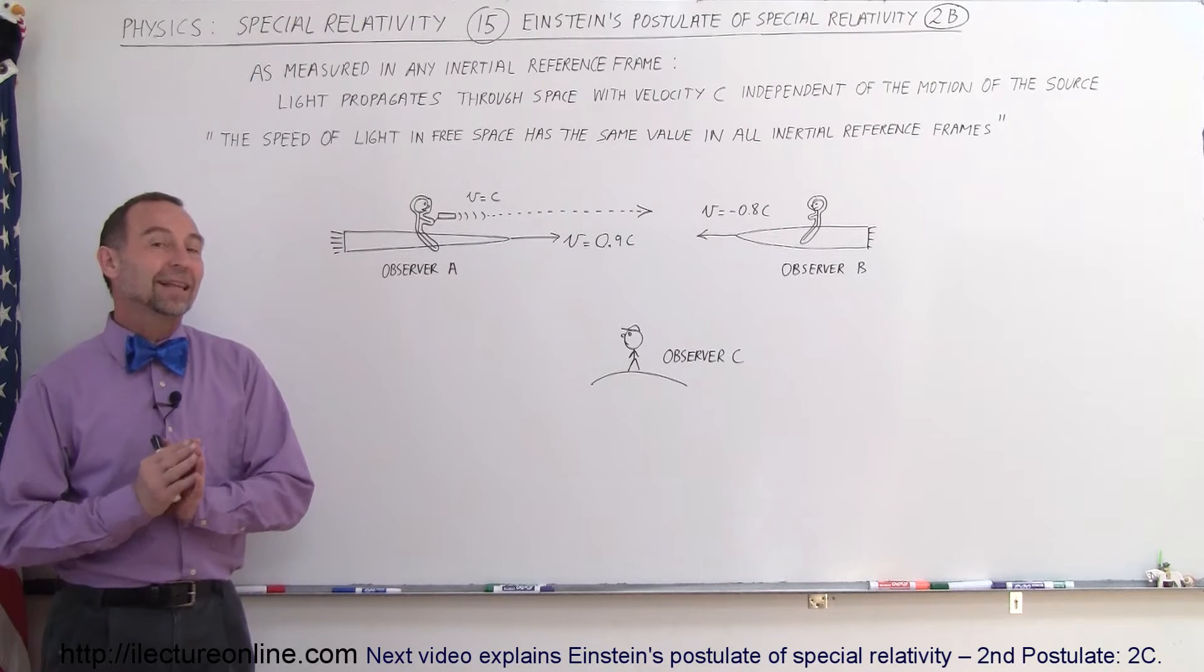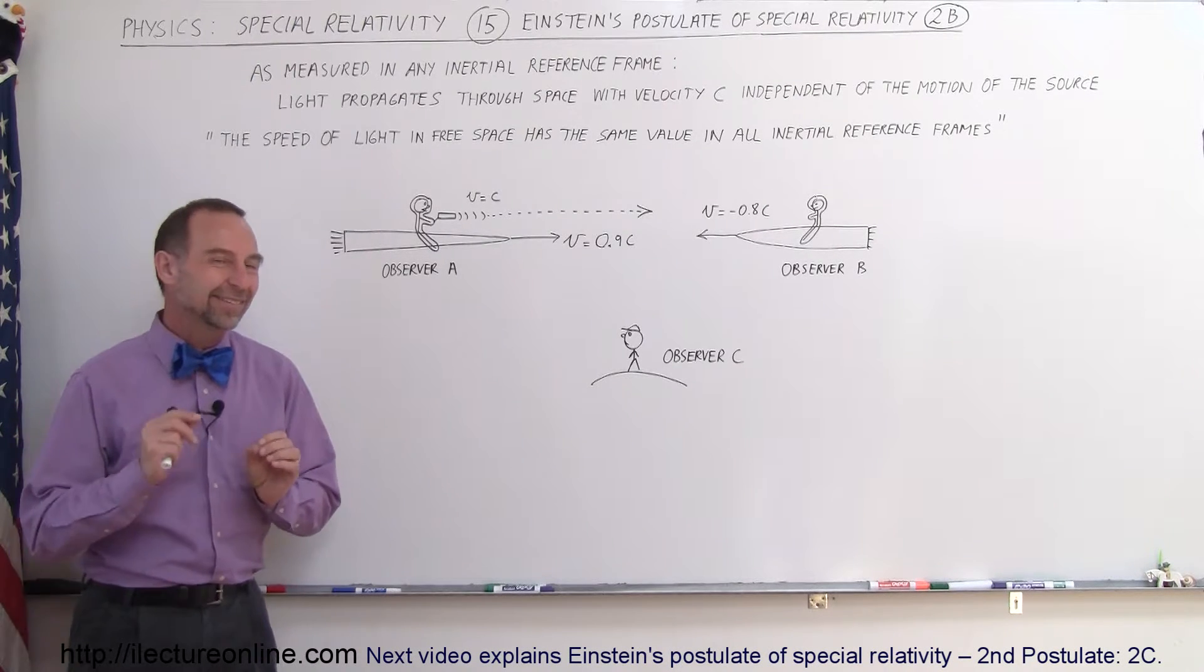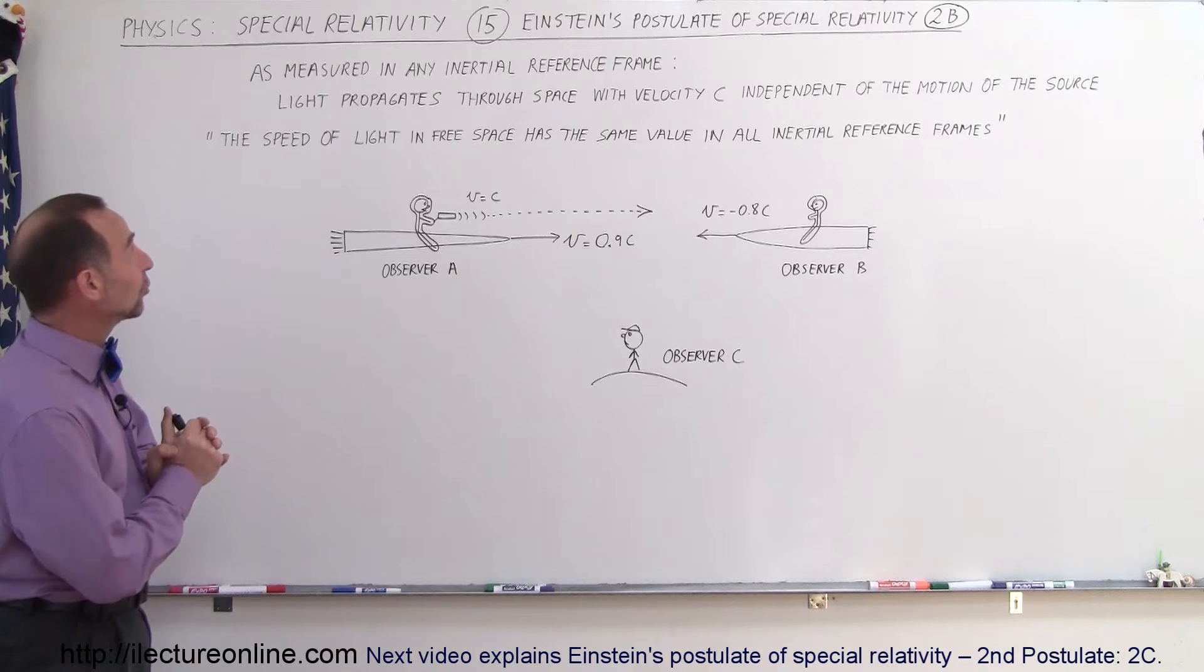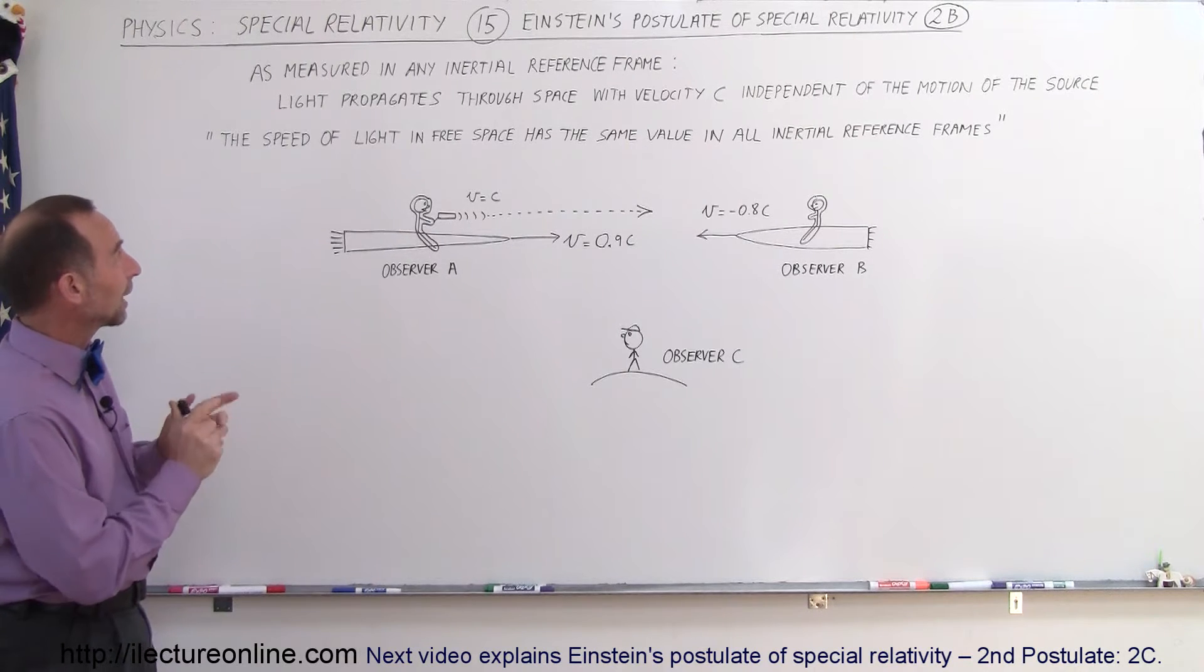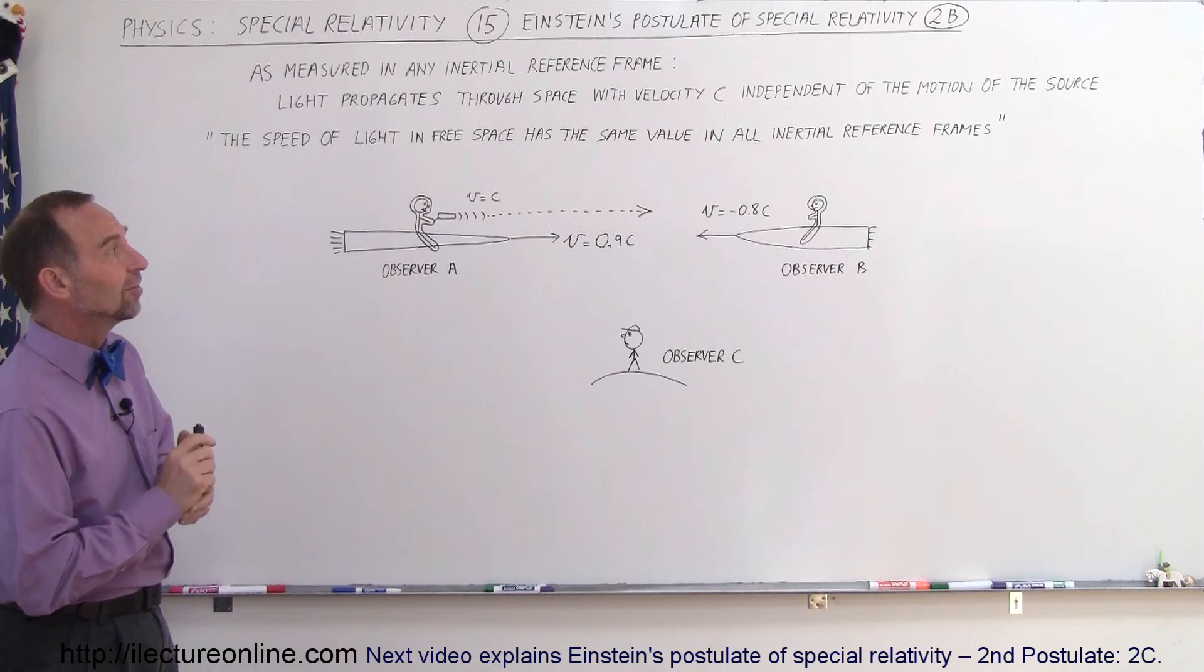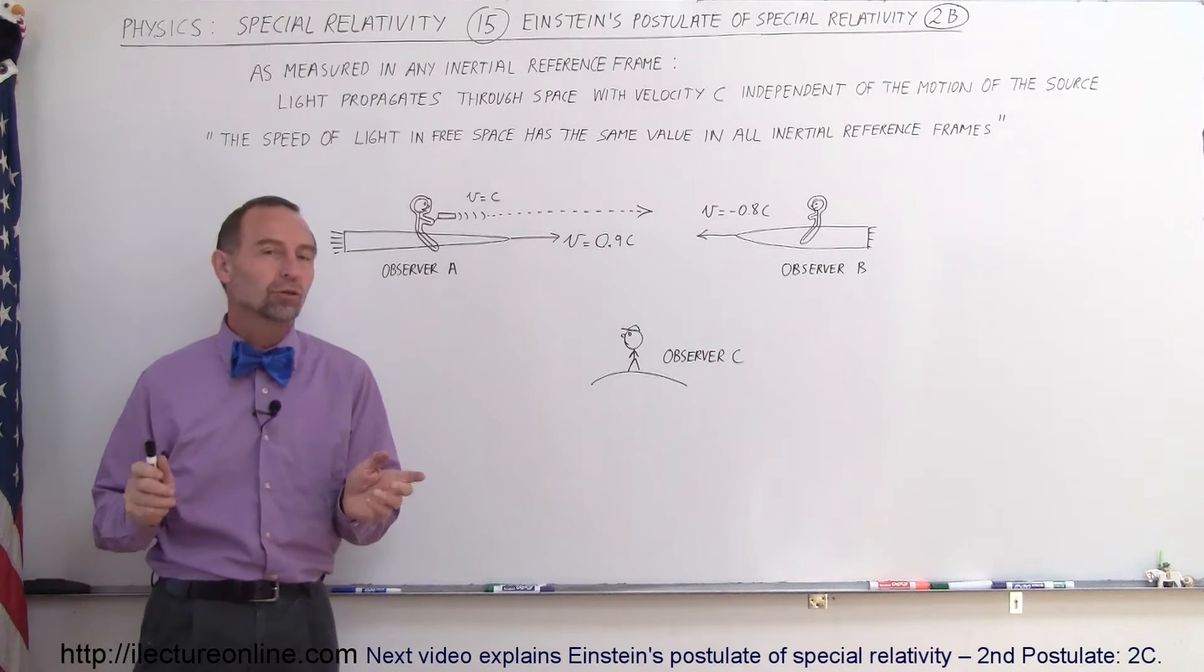Welcome to Electro Online, and now let's take another look at Einstein's second postulate. This one deals with, as measured in any inertial reference frame, light propagates through space with velocity c, independent of the motion of the source.